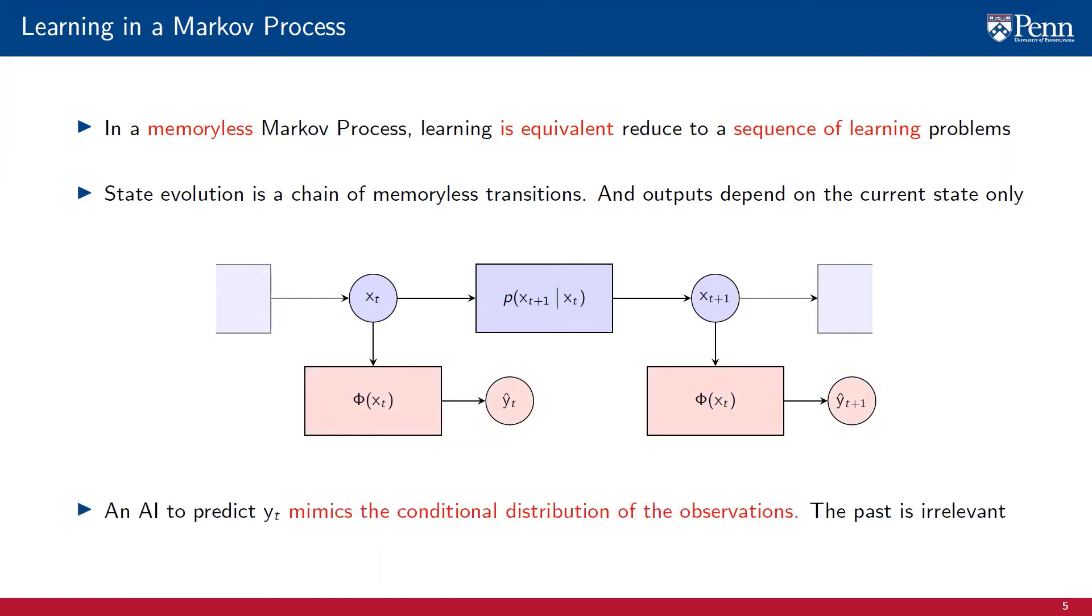Thus, if we want to design an AI capable of predicting the output of the process, it is sufficient for the AI to learn how to mimic the conditional distribution of the observations yt given the present state xt. Since the past is irrelevant in nature, it is irrelevant for the AI.